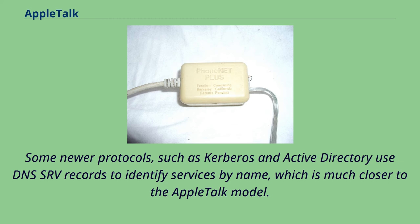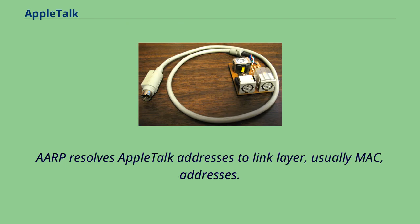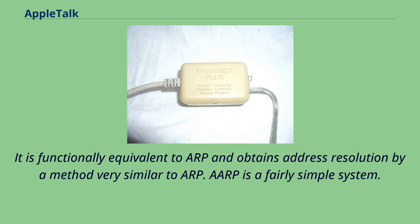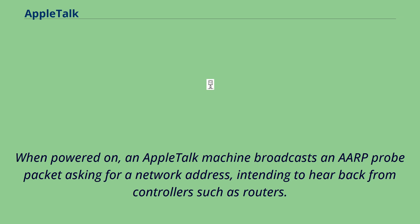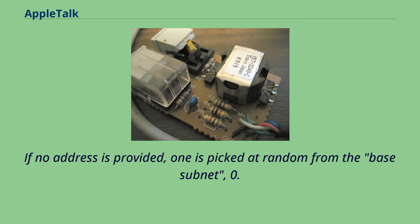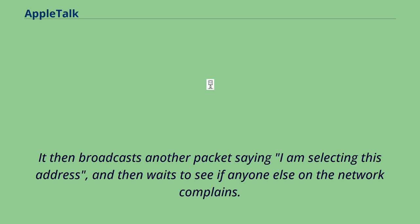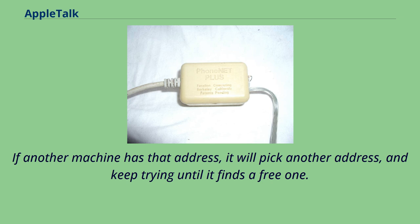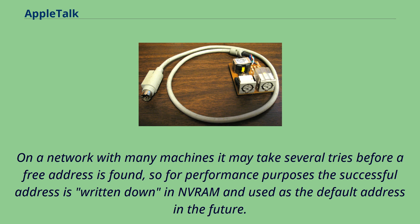AARP resolves AppleTalk addresses to the link layer, usually MAC addresses. When powered on, an AppleTalk machine broadcasts an AARP probe packet asking for a network address, intending to hear back from controllers such as routers. If no address is provided, one is picked at random from the base subnet 0. It then broadcasts another packet saying 'I am selecting this address' and waits to see if anyone else on the network complains. If another machine has that address, it will pick another and keep trying until it finds a free one. For performance, the successful address is written down and reused as the default address in the future, meaning that in most real-world setups only one or two tries are needed.